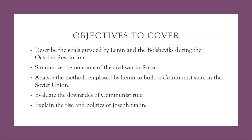Next, we'll be analyzing the methods employed by Lenin to build a communist state in the Soviet Union. Lenin implemented a series of policies aimed at consolidating power and transforming Russia into a socialist society. These included the nationalization of industry, collectivization of agriculture, suppression of political dissent through the creation of the Cheka secret police, and the establishment of one-party rule under the Communist Party of the Soviet Union, known as the CPSU.